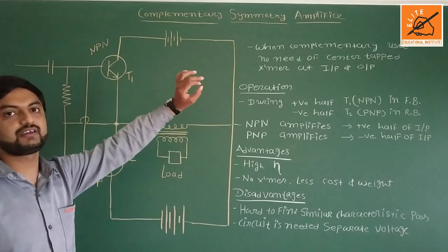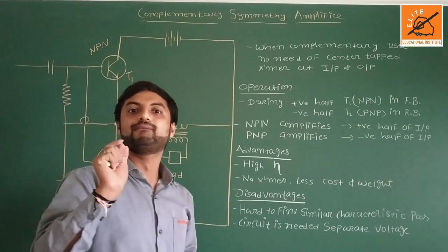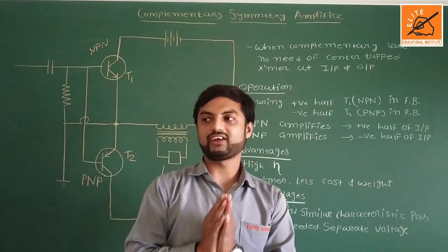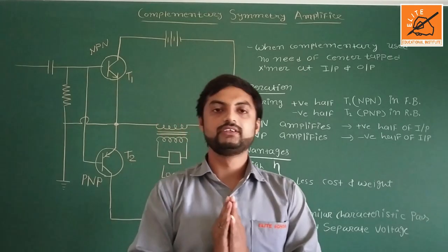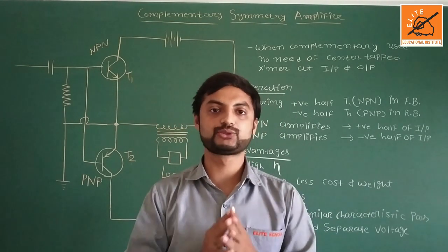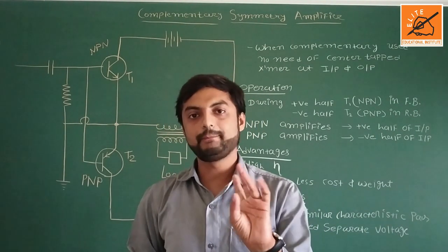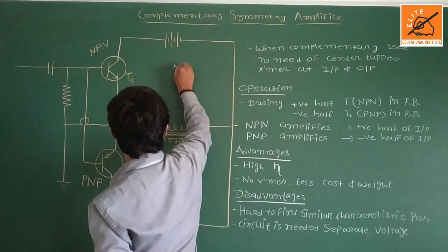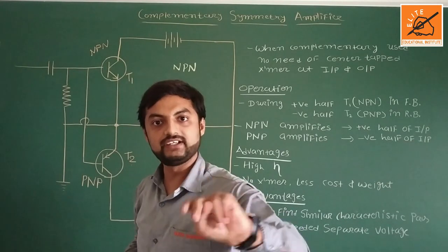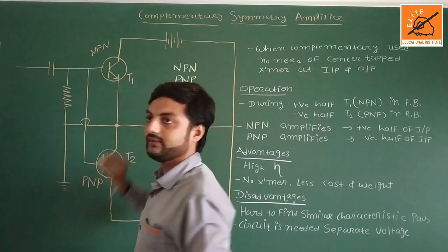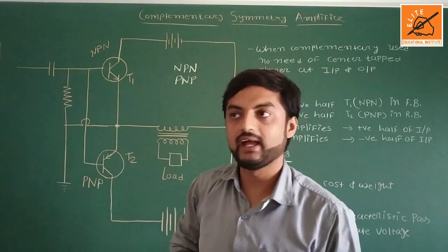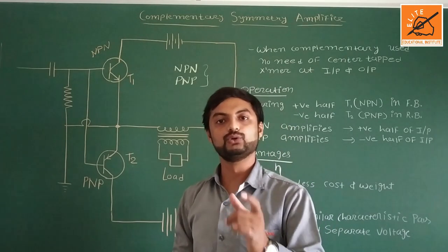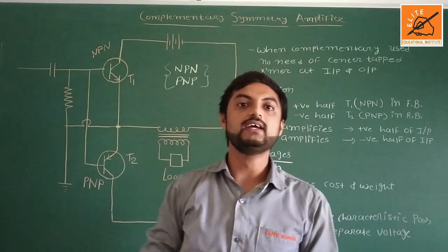This is the figure of complementary symmetry amplifier. First, you should learn what is complementary. Before explaining this I want to ask you one question. There are two types of transistors — what are those two types? First type is NPN transistor, second type is PNP transistor. So these two are the types of transistor, and wherever you use both of these transistors in the same circuit, at that time you can say this is the complementary transistor pair.